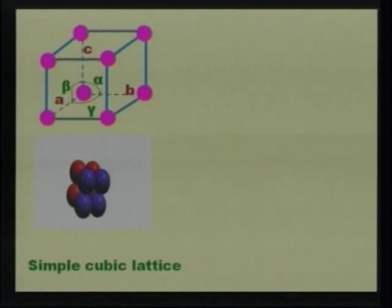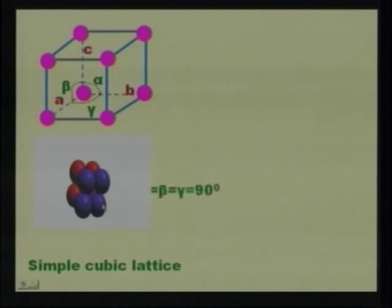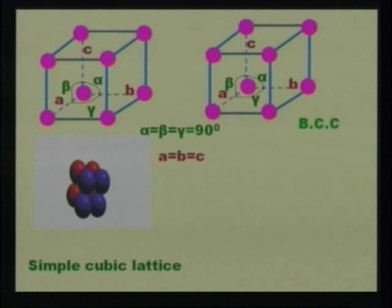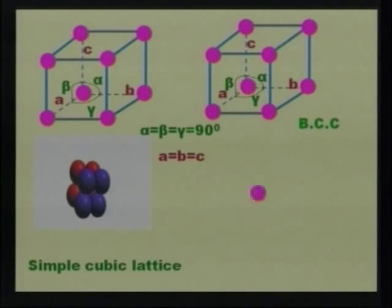In the simple cubic space lattice, there is a cube containing atoms arranged at the corners. The angle between A and B is gamma, B to C is alpha, and C to A is beta, with alpha = beta = gamma = 90 degrees. In the body centered cubic (BCC) lattice, it is similar to the simple cubic lattice, but the difference is that an atom is arranged at the center of the body.